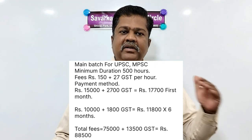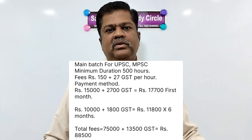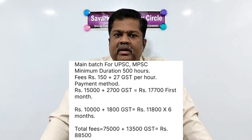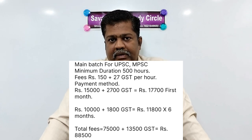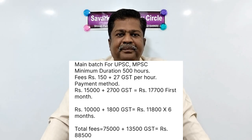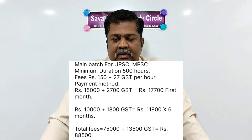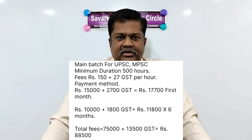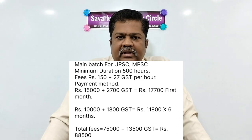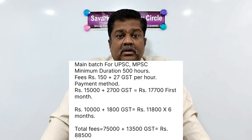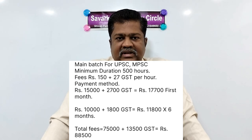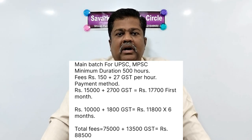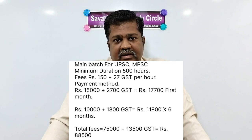The total main batch fees are 75,000 plus 18% GST. You can pay in installments: the first installment is 15,000 plus 18% GST in the first month. The remaining 60,000 can be paid at 10,000 rupees per month plus 18% GST, for six more installments — totalling seven installments to complete the fees.